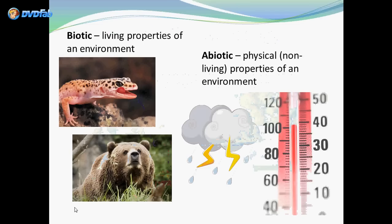Starting with biotic and abiotic factors. Biotic factors are the living properties of an environment, while abiotic factors are the physical, or non-living, properties of an environment. So biotic would be things like animals and plants, and abiotic would be things like temperature and weather and how they affect the environment.